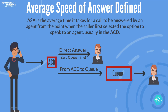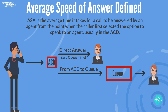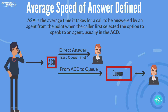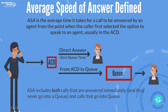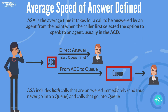Let's define average speed of answer, or ASA. It's the average time it took for a call to be answered by an agent from the point when the caller first selected the option to speak to an agent. Your system takes all of these seconds together and divides by the number of calls actually answered by agents. This includes both calls directed to a queue and calls that go to agents who are immediately available and thus do not need to go to a queue.